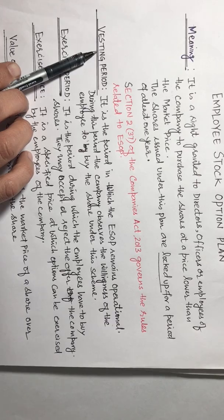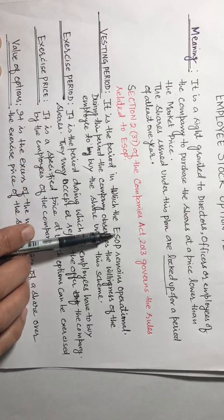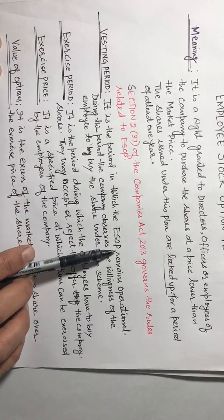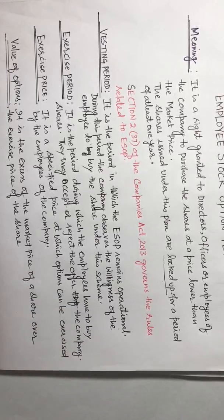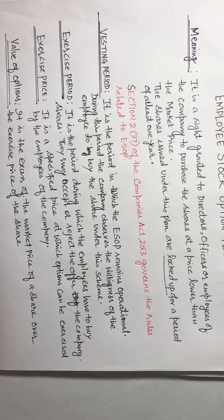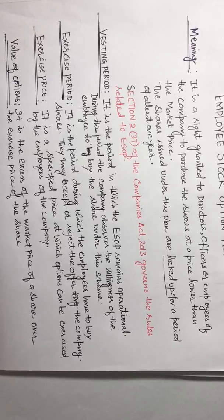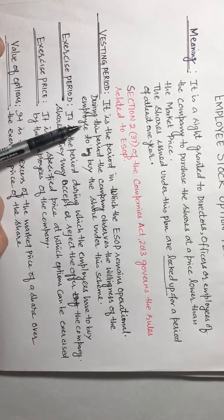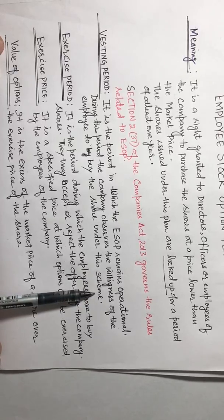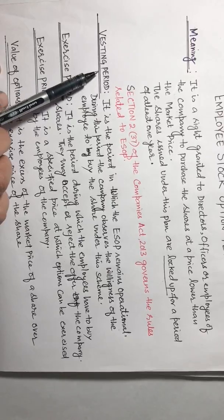Next topic is vesting period. It is the period in which ESOP, the Employee Stock Option Plan, remains operational. The company gives an option to make up your mind to purchase the shares. So during this period, the company observes the willingness of the employees to buy the shares under this scheme. The period in which the scheme remains operational is called vesting period.